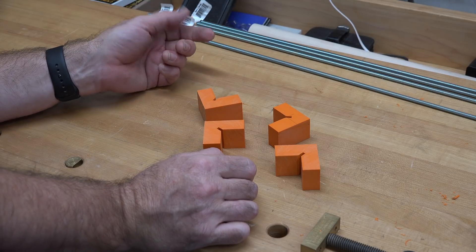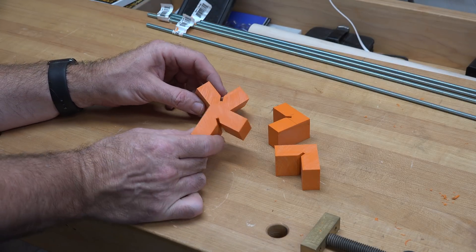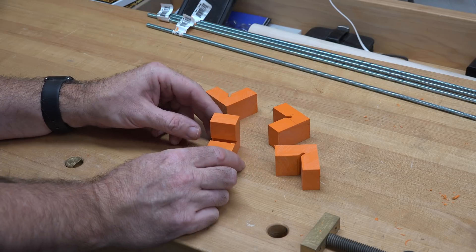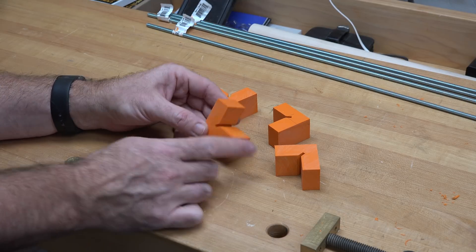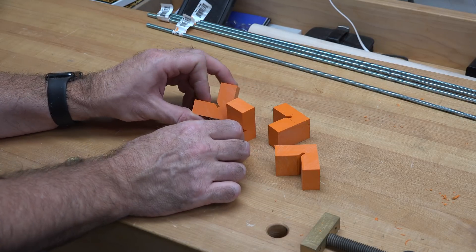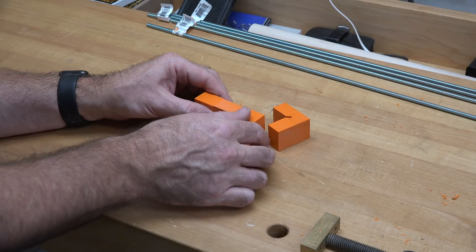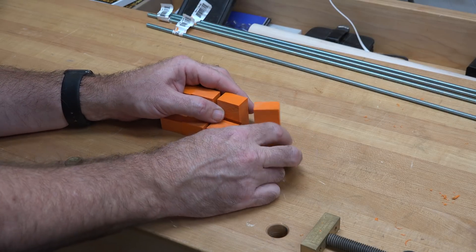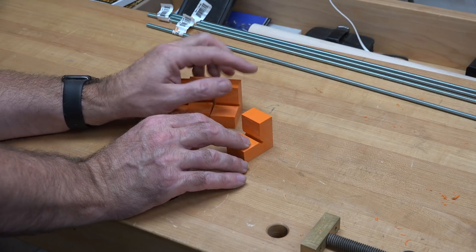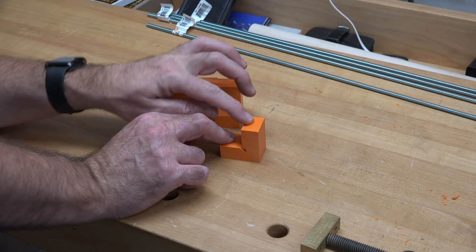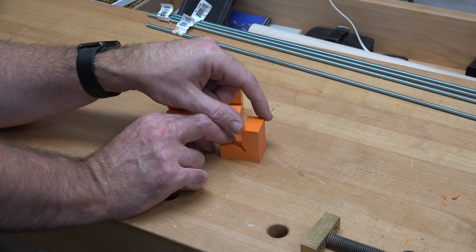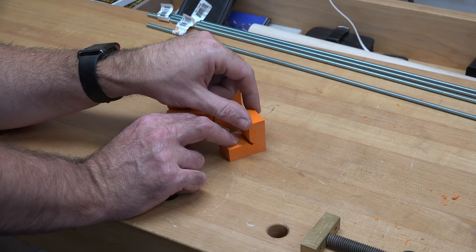If you followed along so far, you should have four brackets that look just like this. Our next step is to choose one of your legs—doesn't matter which one on each blank. I need to drill a 13/64 hole right in the middle of this leg, one inch deep straight down, centered on one leg of each bracket.